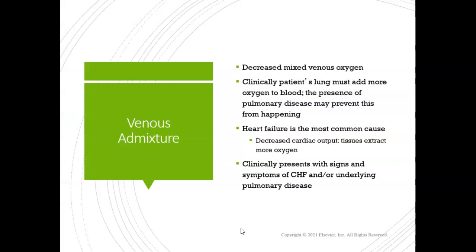Venous admixture is a decrease in mixed venous O2. Clinically, this is when a patient's lungs must add more oxygen to the blood because the blood returning is already very low. If this happens and the patient already has pulmonary disease, this can seriously complicate the situation. The most common cause of venous admixture is heart disease or heart failure.